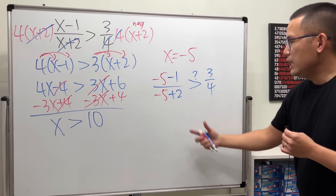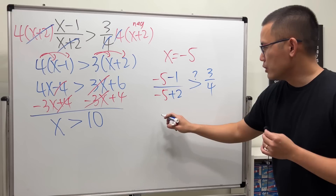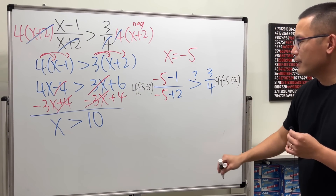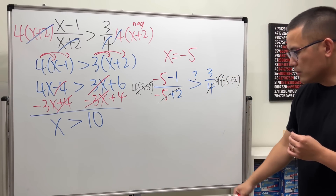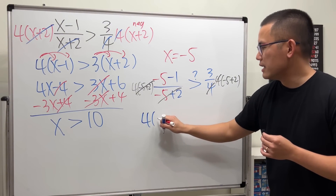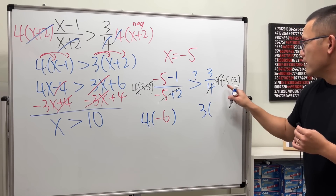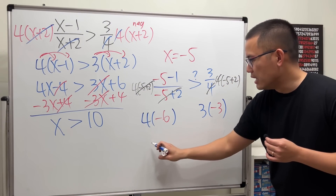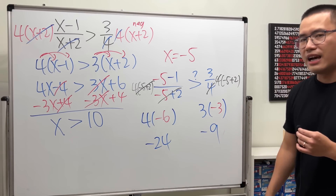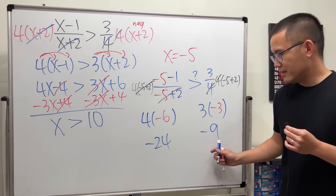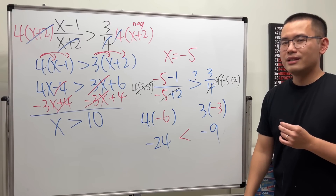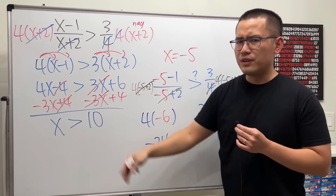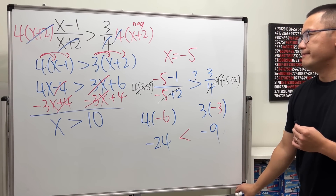Let me make it super clear. If we multiply by 4 times negative 5 plus 2, the cancellations still work, but now we have 4 times negative 6 on the left, which is negative 24, and 3 times negative 3 on the right, which is negative 9. Negative 9 is actually bigger, so we have to flip the inequality. That's why the earlier approach missed the case when x plus 2 is negative.